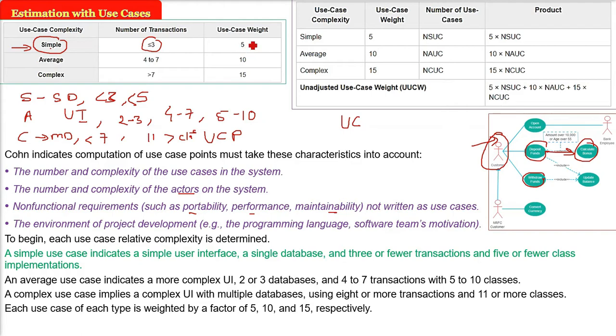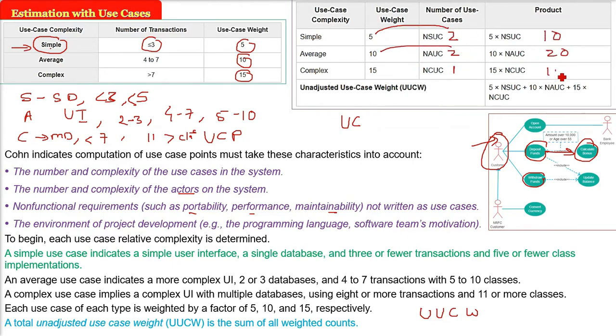Every use case complexity has a weight. Simple has a weight of 5, average has 10, and complex has 15. This is how we find UUCW, unadjusted use case weight, which is the sum of all weighted counts. For example, if your project has two simple cases, two average cases, and one complex case: 5×2=10, 10×2=20, 15×1=15. Adding them: 10+20+15=45. So 45 is the UUCW.